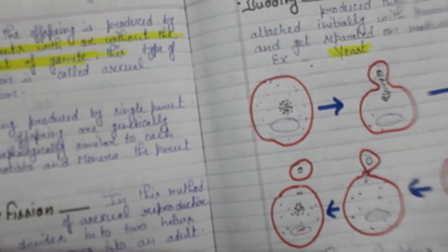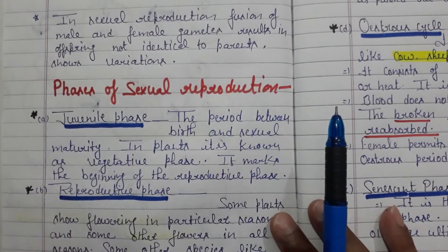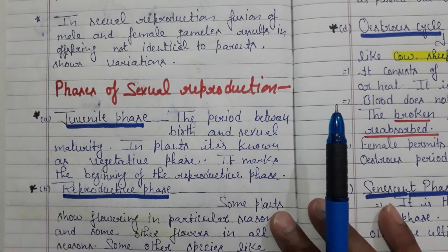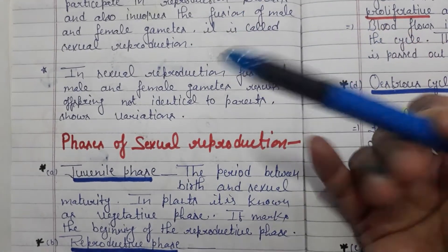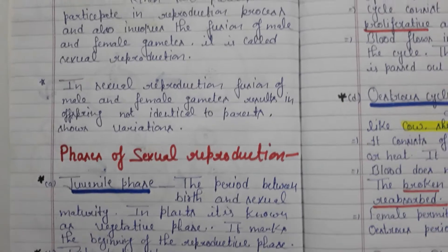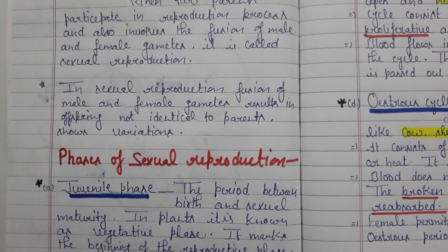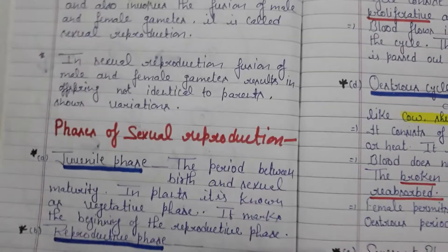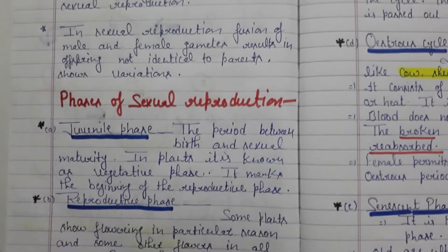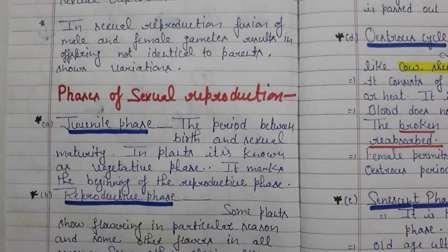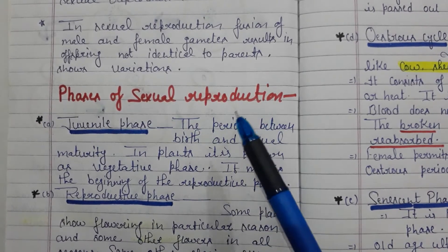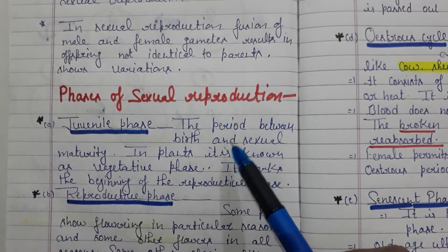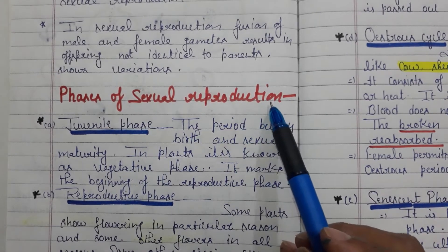So today I will discuss with you the phases of sexual reproduction. Sexual reproduction occurs by the help of two parents — one is the male and the second is female. We are going to discuss which phases are involved in sexual reproduction.